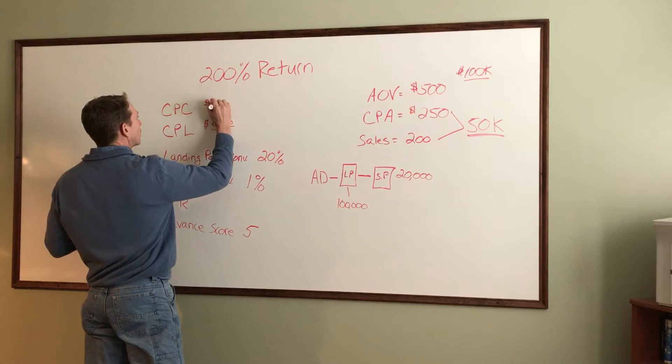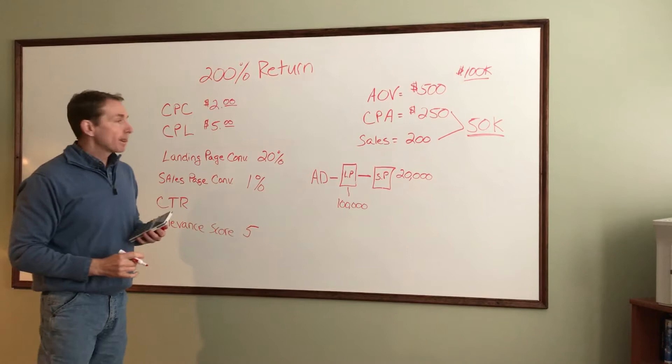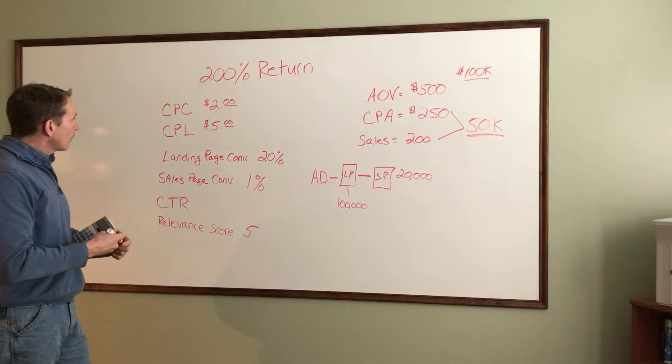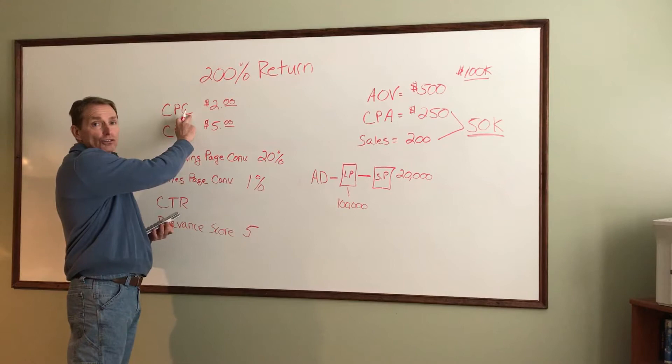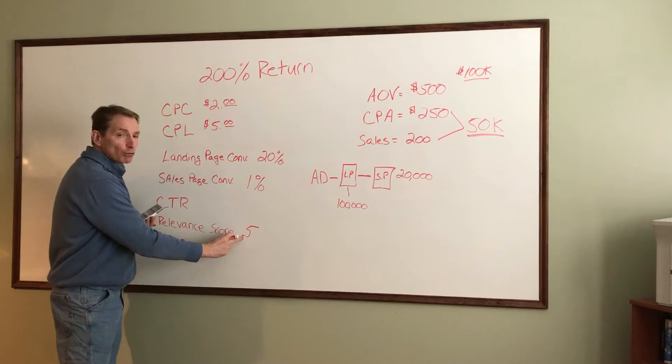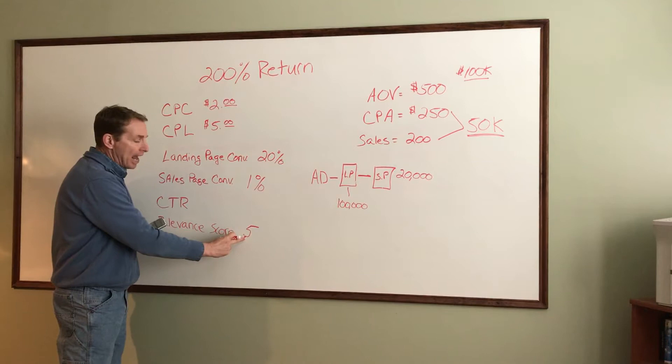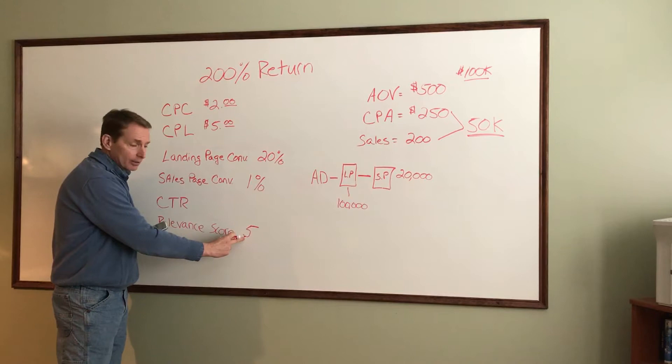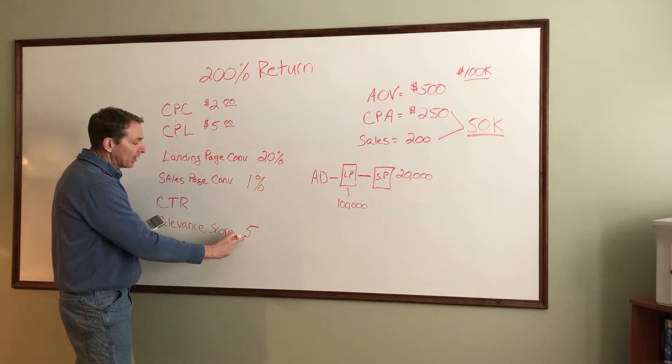If we're running an ad and our CPC is above $2, it means we need to check our ad. Check your relevance score — if it's below 5, we know we have an ad problem. The ad could be in front of the wrong audience, something wrong with the creative, the headline, or the copy itself. It's something we need to test and work on if our CPC goes above $2.